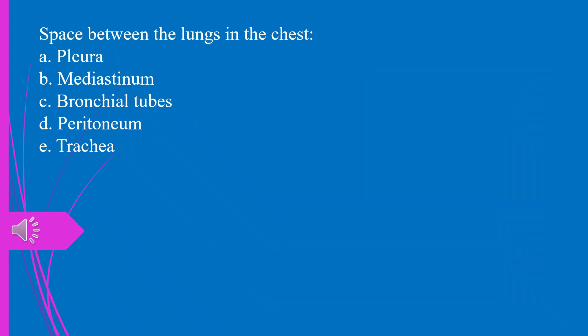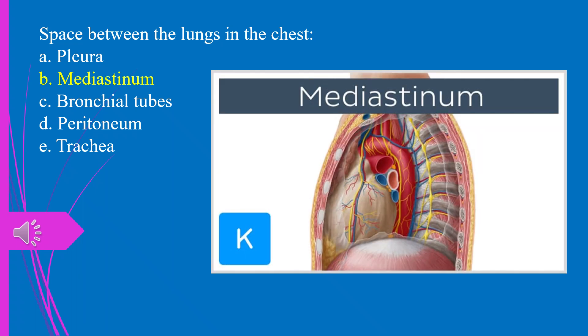Question 33. Space between the lungs and the chest: a) pleura, b) mediastinum, c) bronchial tubes, d) peritoneum, e) trachea. The answer is b, mediastinum.